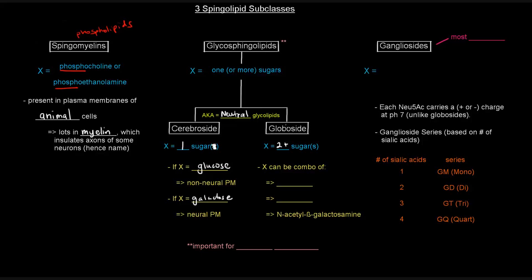Now, globosides have two or more sugars attached as that X polar head group. That X can be a combo of glucose, you could have galactose, you could have N-acetyl-beta-galactosamine. The point is that you would have two or more sugars attached as the polar head group.